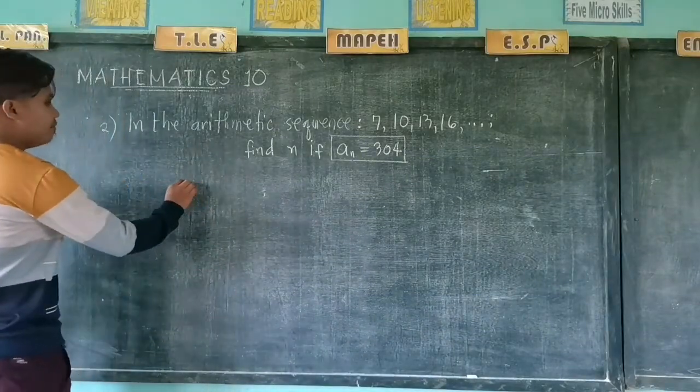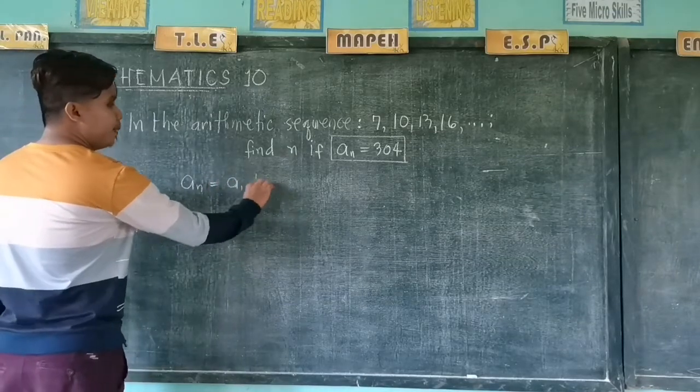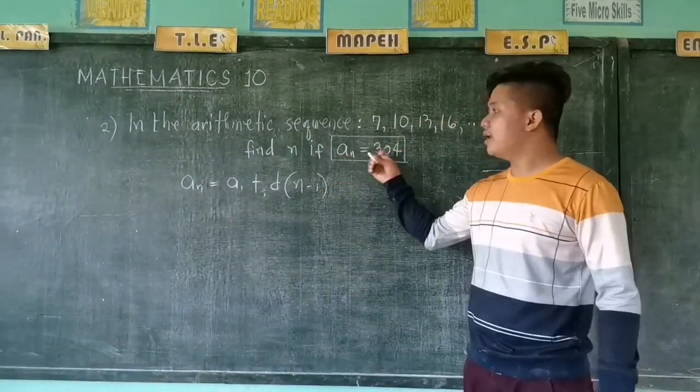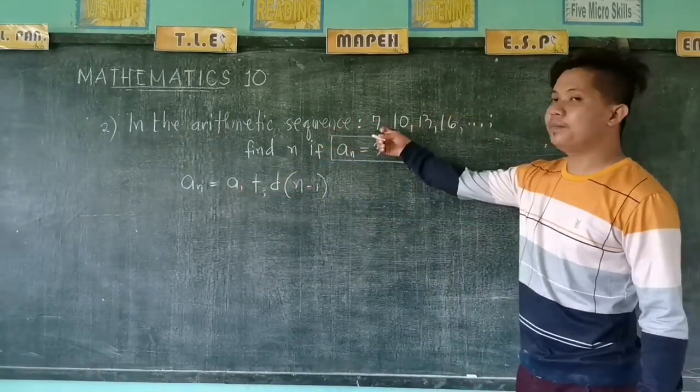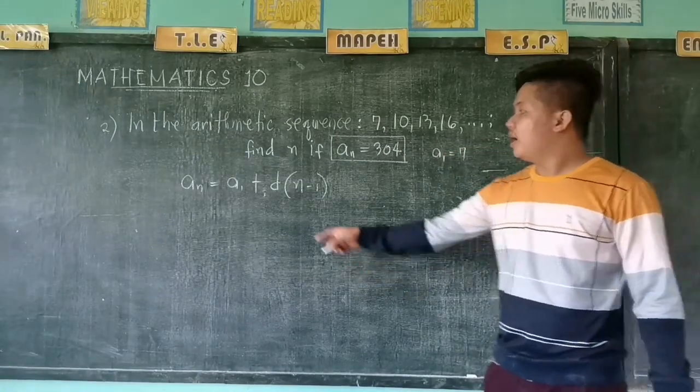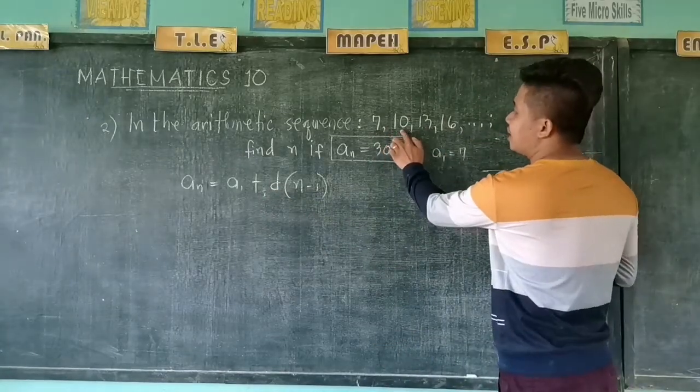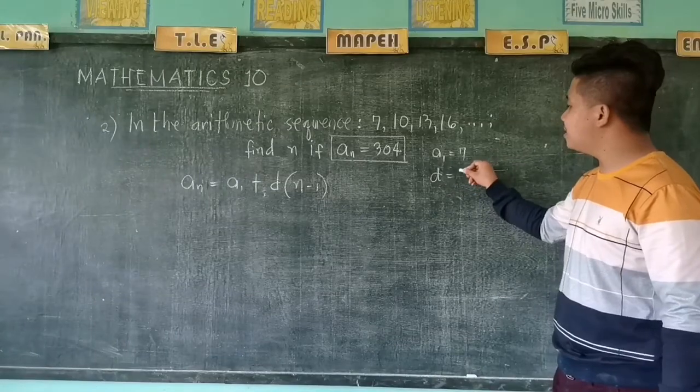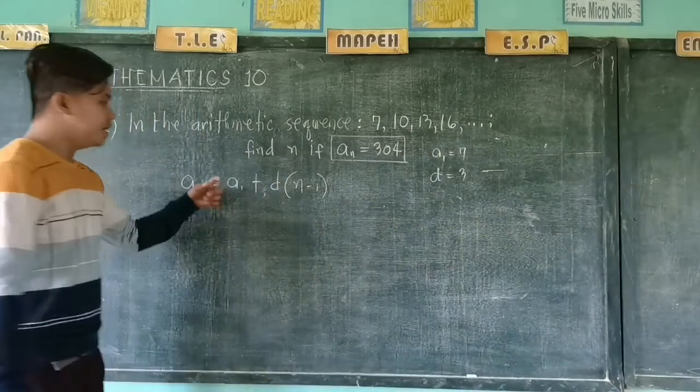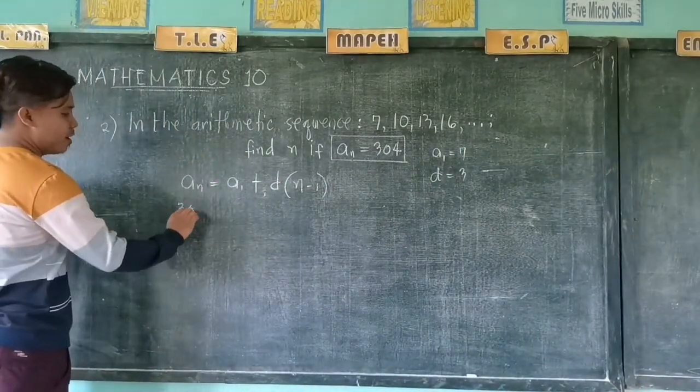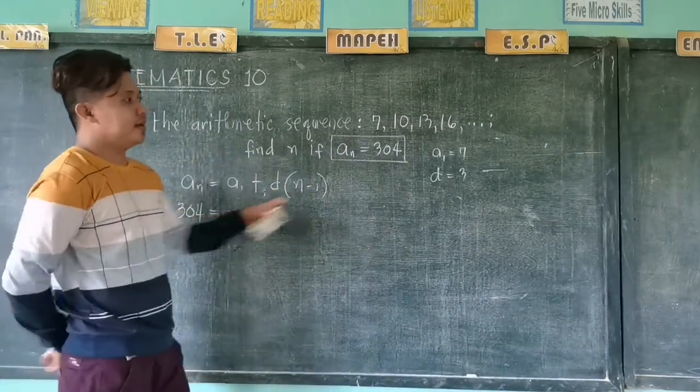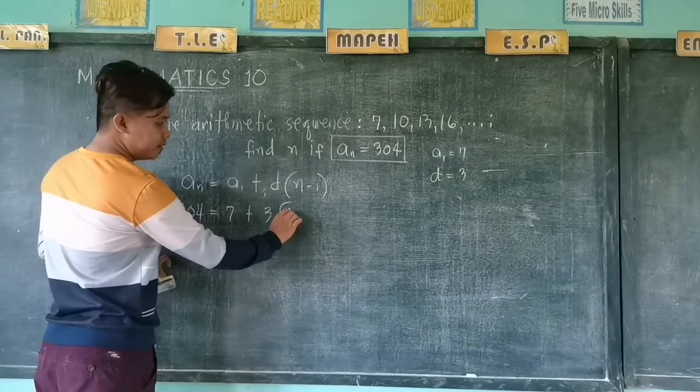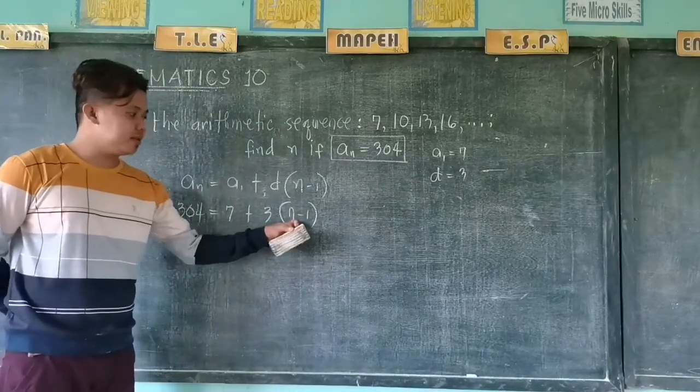So let us still use the formula. We have a_n equals a_1 plus d times n minus 1. Let us identify first. This is our a_n. a_1 is 7, our d is 10 minus 7 plus 3, 13 minus 10 is 3, 16 minus 13 is 3. So therefore, our common difference is 3. So let us substitute these given values to the formula. a_n is 304, a_1 is 7 plus d which is 3, then copy n minus 1. We are going to find what is the value of n.